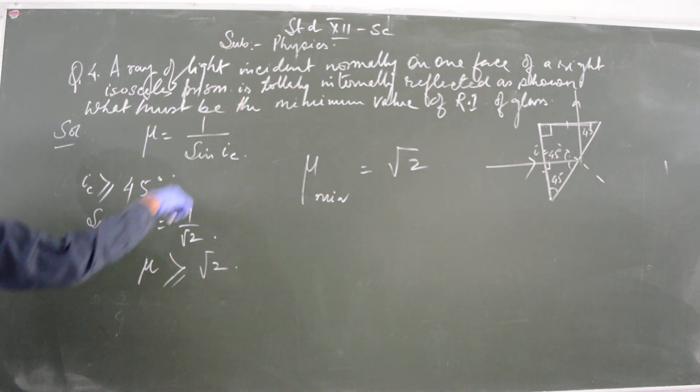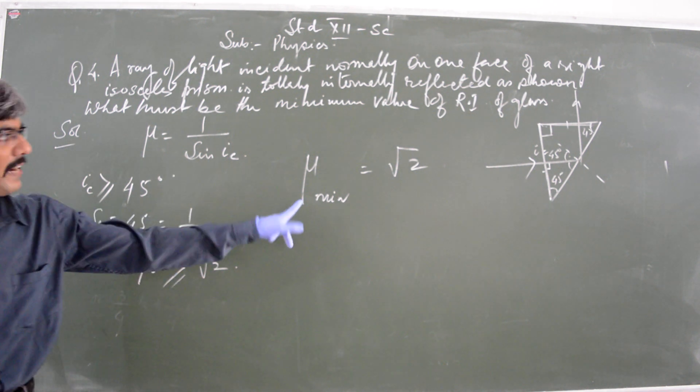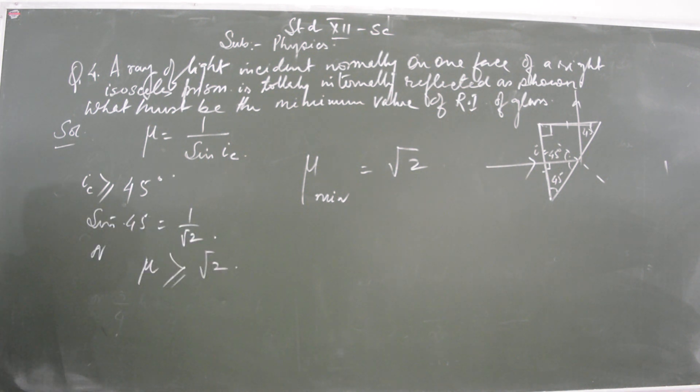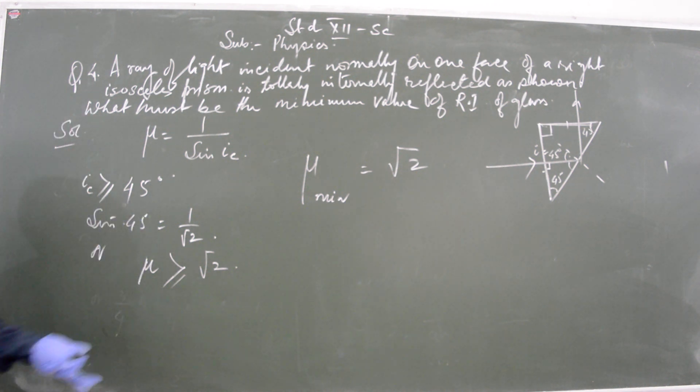You can relate these relations together. Therefore, the minimum refractive index of this prism should be equal to root 2. Anything greater than root 2, then total internal reflection takes place, else it refracts.